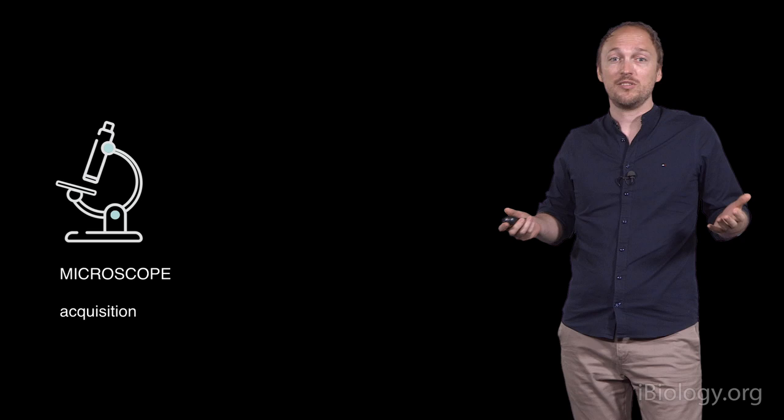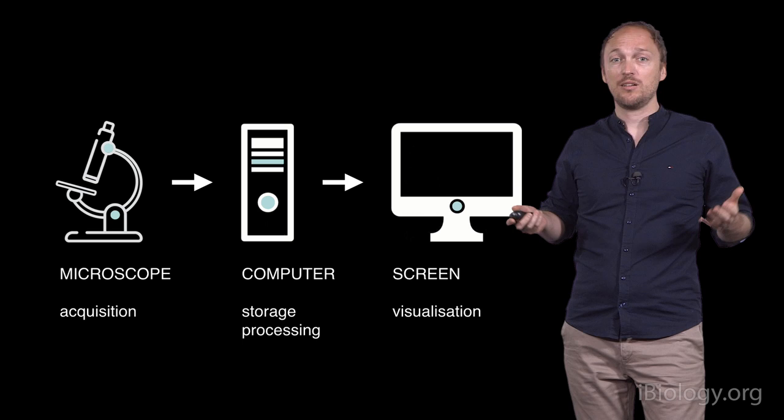So, microscopy starts at the microscope by acquiring the image data on a camera or detector. This data is then stored and processed on the computer. And finally, the data can be visualized on the screen.